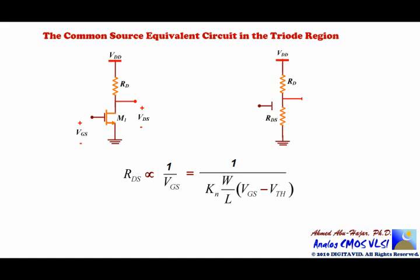Our objective is to solve for the output voltage at the drain. The output voltage, which is the drain voltage, is the same voltage across RDS. The output voltage can be found using the voltage divider, where V_out equals V_DS, which equals RDS over RDS plus RD times VDD.